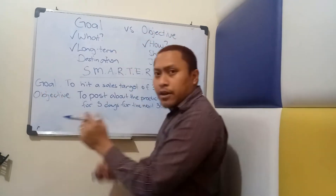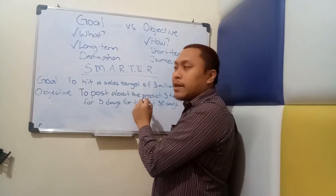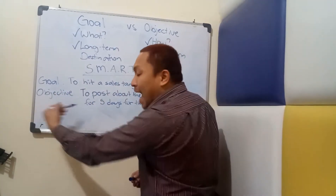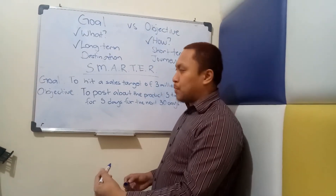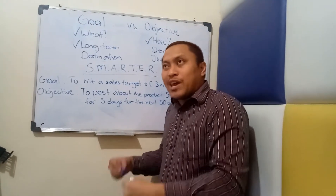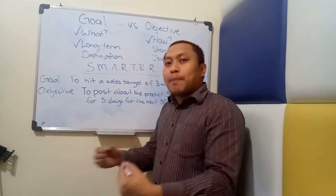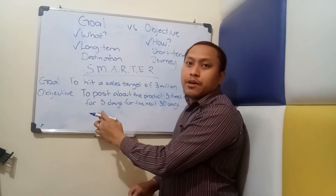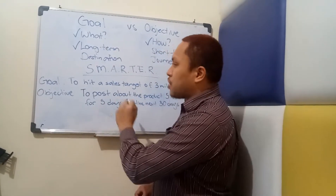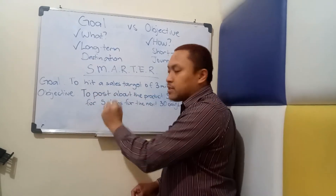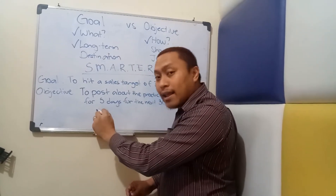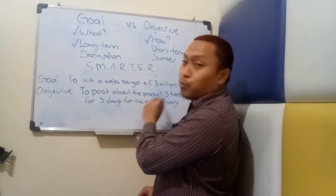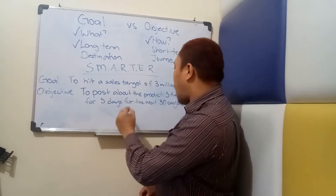So let's say that in our example the goal is to hit a sales target of three million. More often than not, goals are generic or broad — it is in the writing of objectives that we make things much more specific or particular. SMARTER can be treated as the criteria by which we ensure that our objective is doable. Let's say that to hit a sales target of three million, this company needs to focus on digital or online marketing, and one of the objectives determined is to post about the product five times a day for five days for the next 30 days.